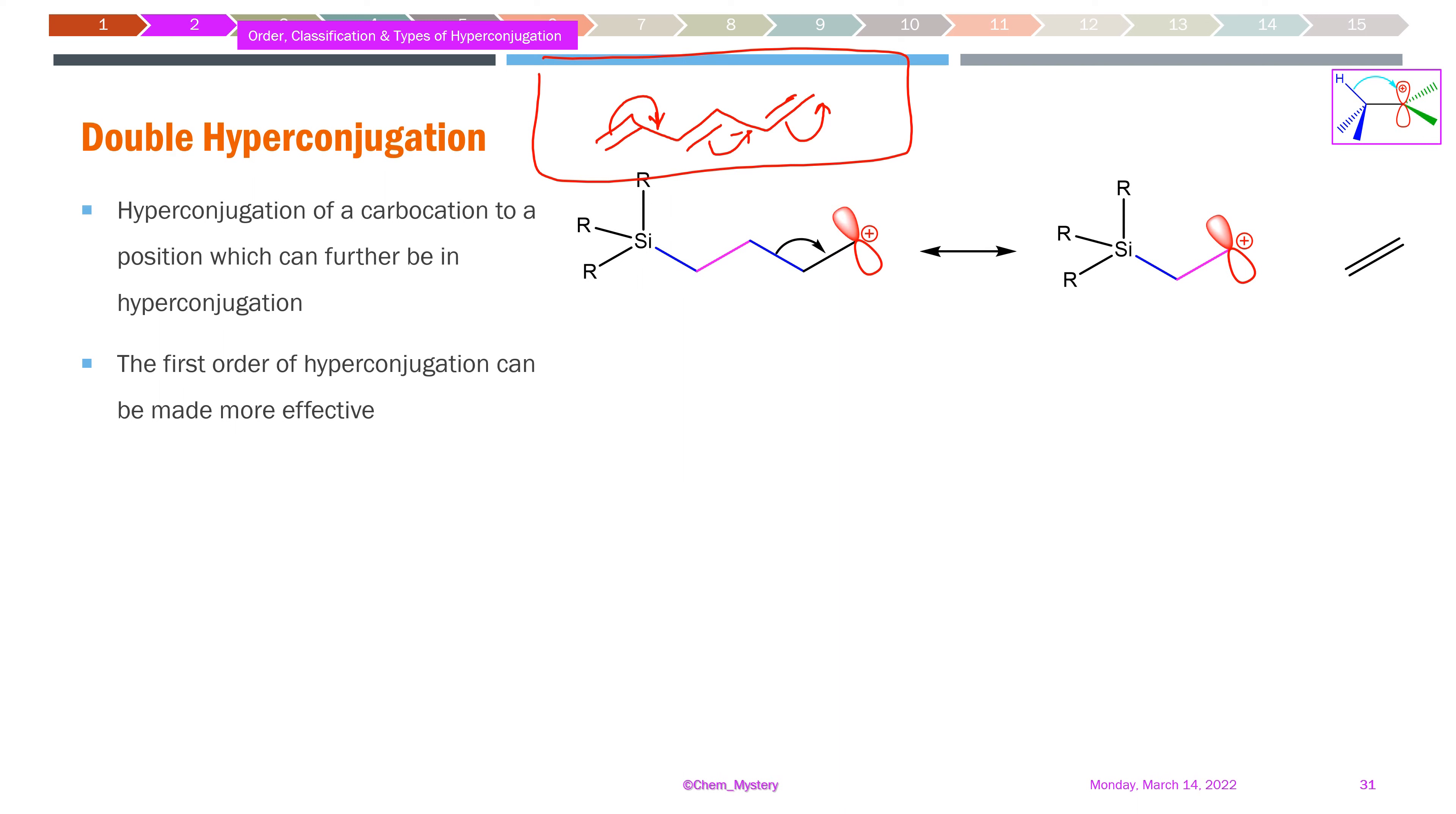The first level of hyperconjugation shown here demonstrates that, although we've emphasized carbon-hydrogen bonds in most examples, hyperconjugation isn't limited to these. It can also occur through carbon-carbon bonds.